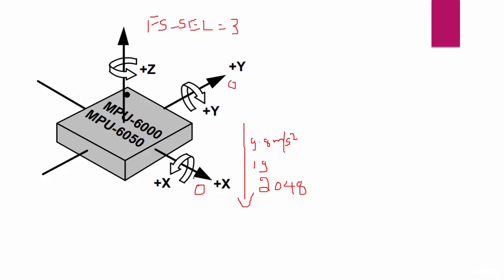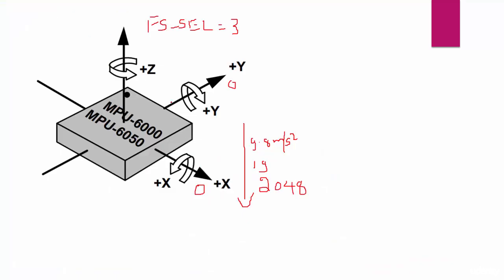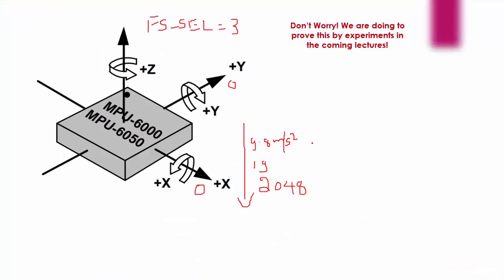Suppose the full-scale selection is this one, let's say 1. Then when the sensor is at rest like this, the z-axis reading must be 8192. So this you can experiment and you can find out.